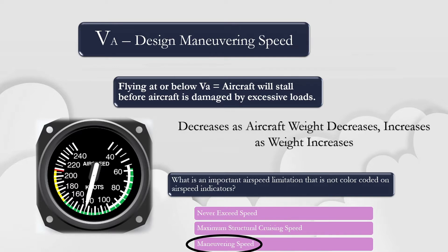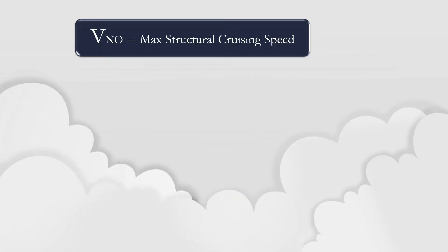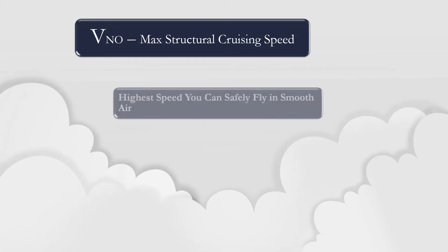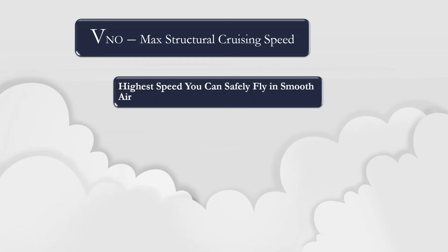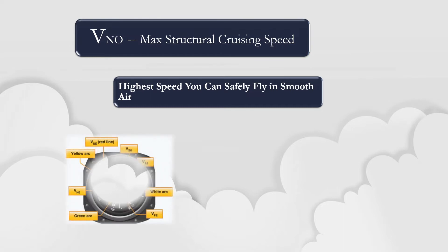The VNO speed indicates the maximum structural cruising speed of the aircraft. VNO is the highest speed at which a pilot can safely fly in smooth air, and is indicated by the upper limit of the green arc on the airspeed indicator.